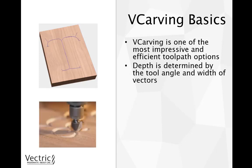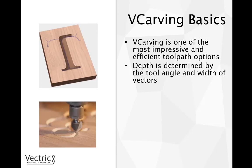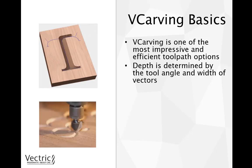It's important to understand how v-carving works: the depth of the cut is determined by the tool angle and the width of the vectors. V-carving can only be done with closed vectors, as it will run the tool directly in the centre of the opposing vectors to the depth that the tool can essentially fit in between them, up to the maximum pass depth specified. Understanding this is essential when considering the perfect tool for the look you want to achieve.